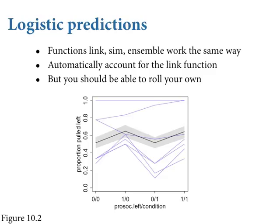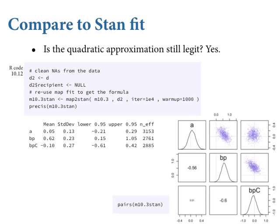One thing you might wonder: we fit these models with MAP. In general, GLMs can have non-quadratic posterior distributions — meaning the posteriors may not resemble multivariate normal. But for these models, the quadratic approximation is actually excellent. You can pass a MAP fit directly into map2stan, and it just extracts the data and formula and runs the Markov chain. The table of coefficients is the same, and the pairs plot shows marginal posteriors close to Gaussian — a nice central limit theorem safe place.